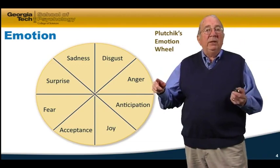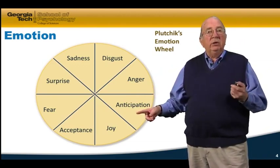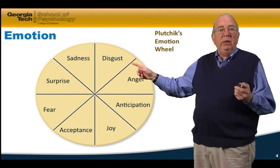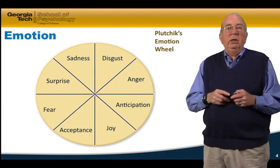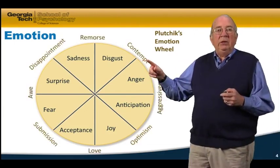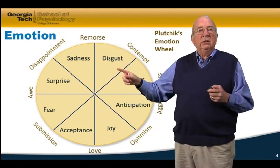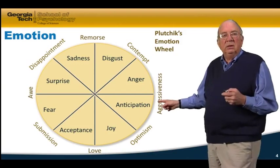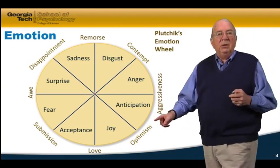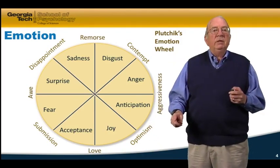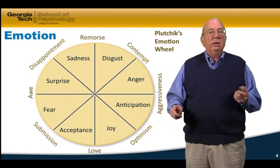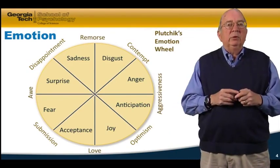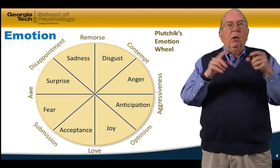And you could have surprise or anticipation — again opposite from each other. Then Plutchik looked at the differences between two states next to each other and created combined emotional states. For example, the combination of sadness and disgust is remorse; disgust and anger is contempt; anticipation and anger is aggressiveness; anticipation and joy is optimism; acceptance and joy is love; acceptance and fear is submission; surprise and fear is awe; and surprise and sadness is disappointment. This is Plutchik's attempt to categorize emotional states along several dimensions.